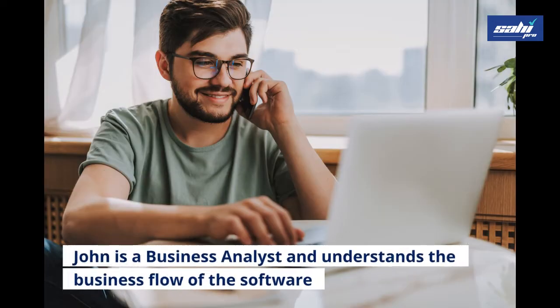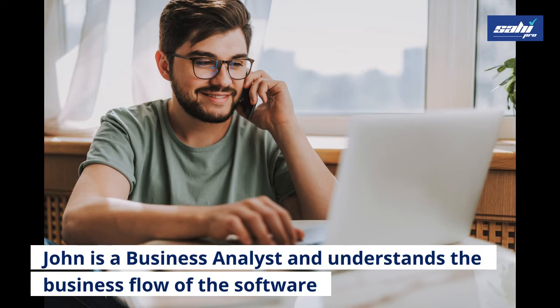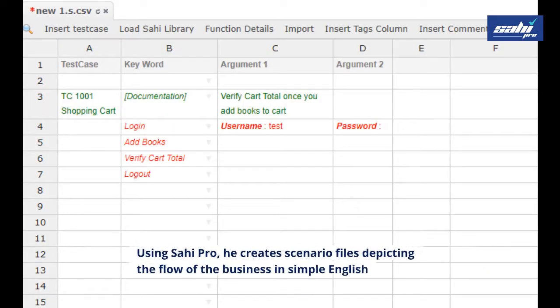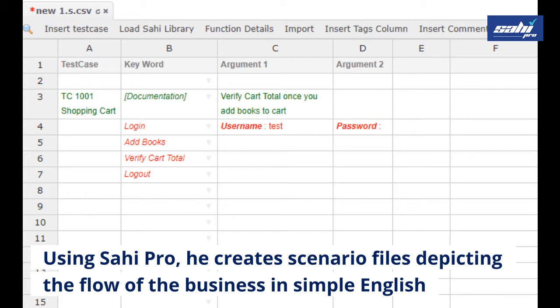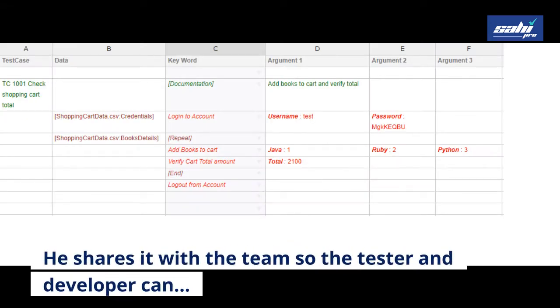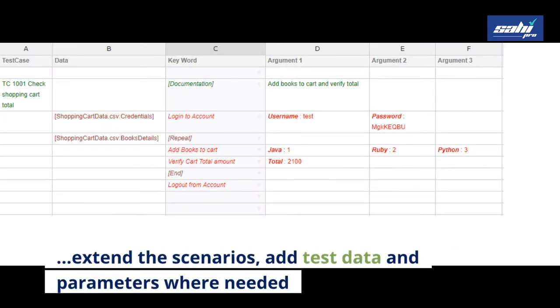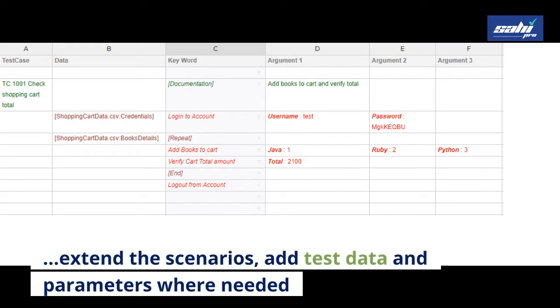John is a business analyst and understands the business flow of the software. Using Sohee Pro, he creates scenario files depicting the flow of the business in simple English. He shares it with the team so the tester and developer can extend the scenarios, add test data and parameters where needed.